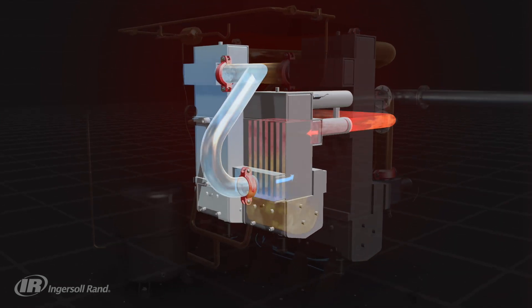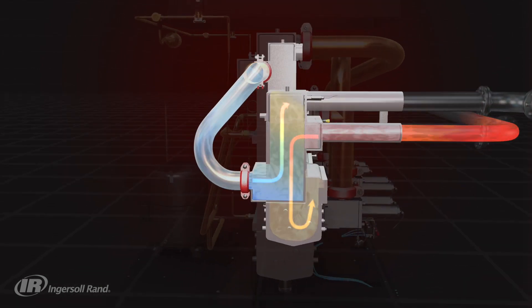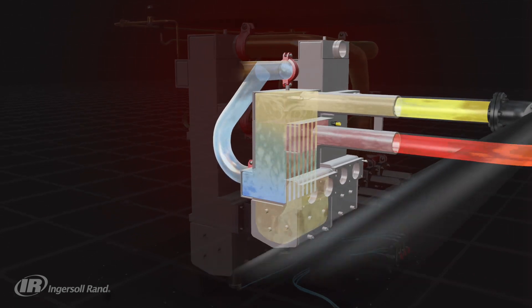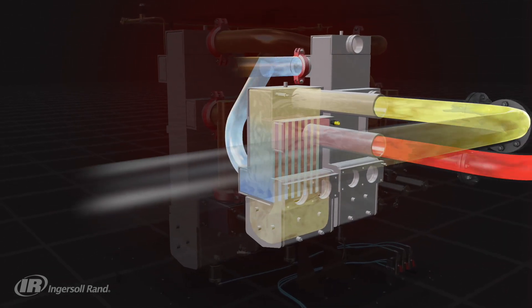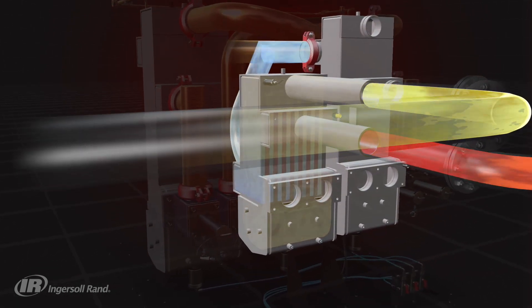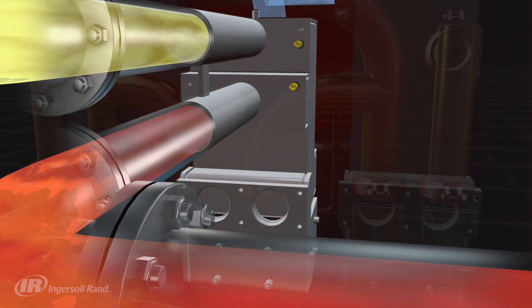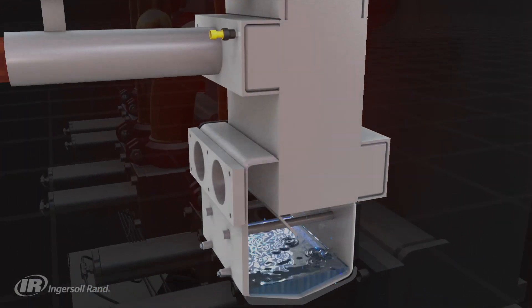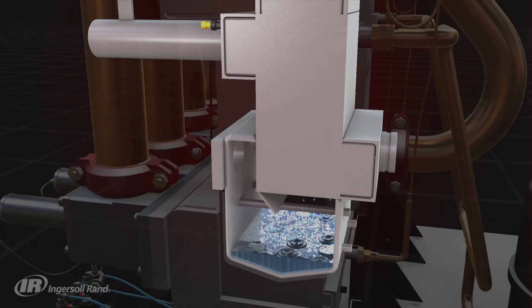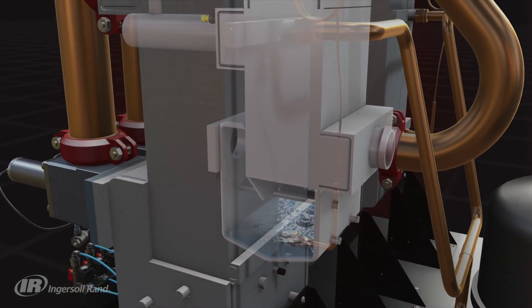This ensures the air exiting the dryer at a pressure dew point of minus 20 degrees Celsius is at an acceptable temperature. It also has the effect of partly cooling the incoming air, allowing for the efficient release of around 85% of its moisture content, which drops to a reservoir and is drained from the dryer.